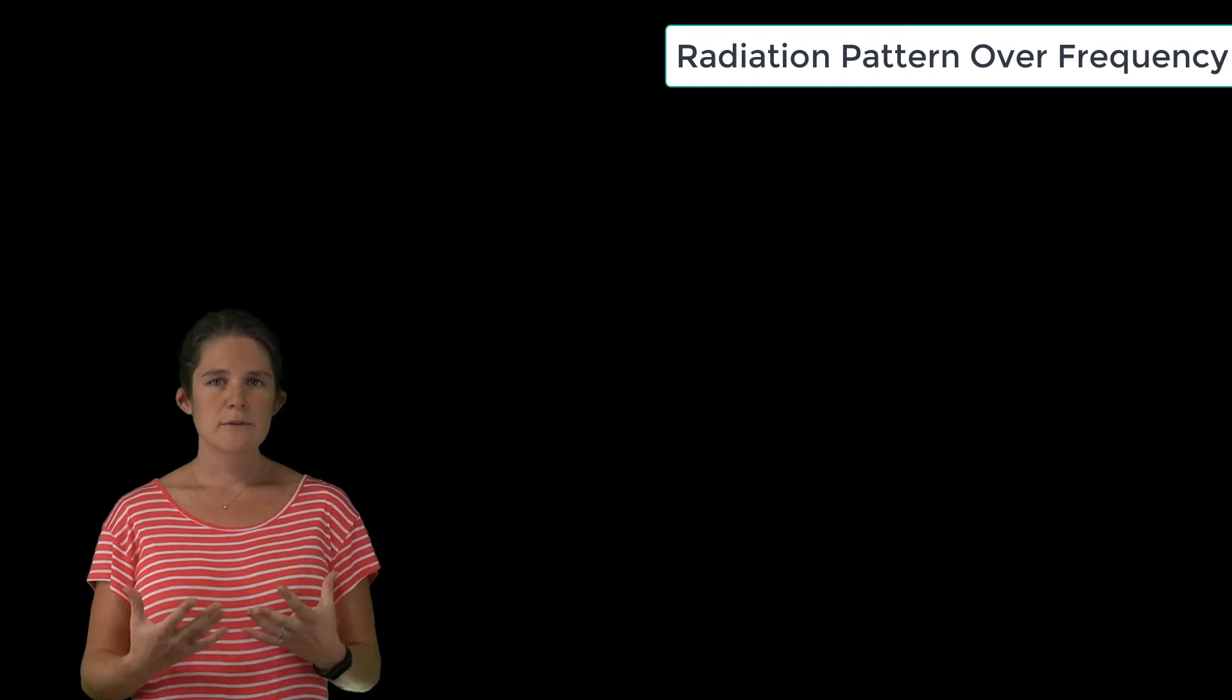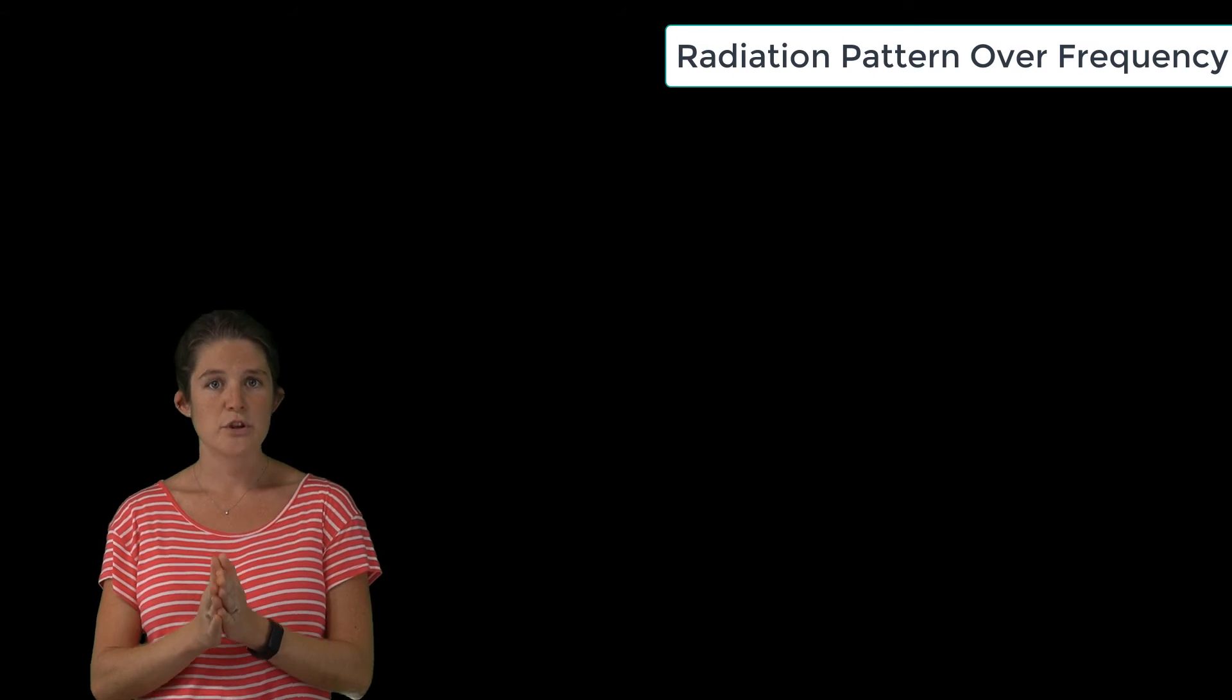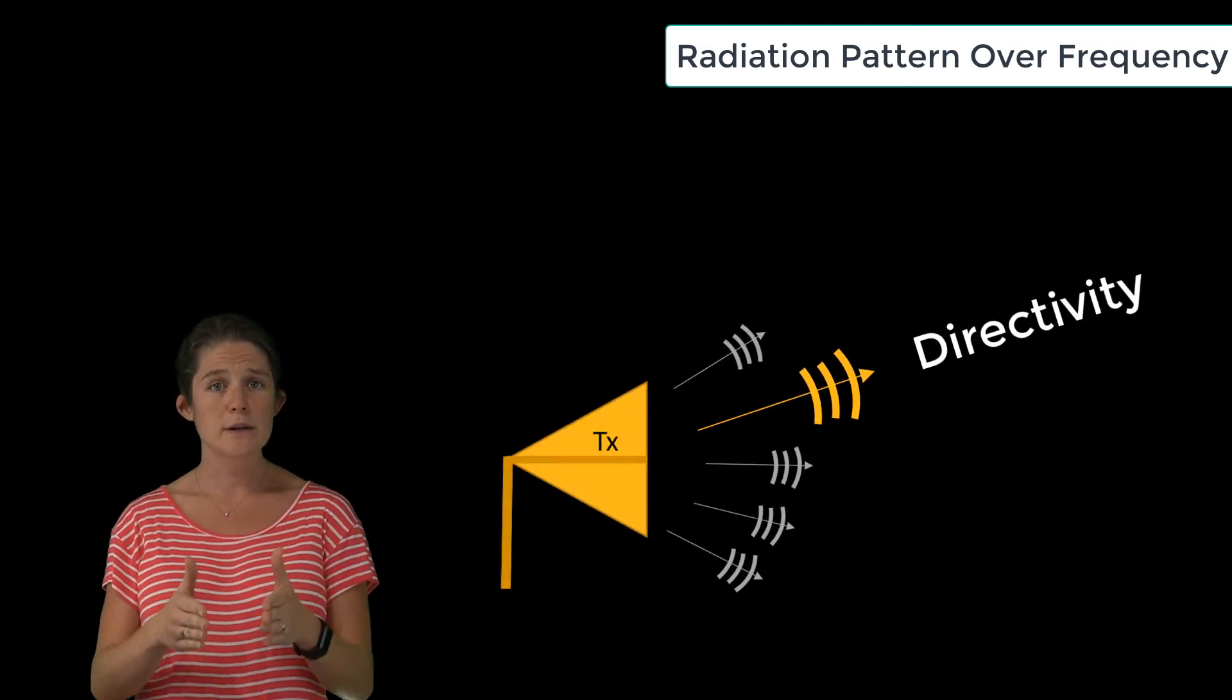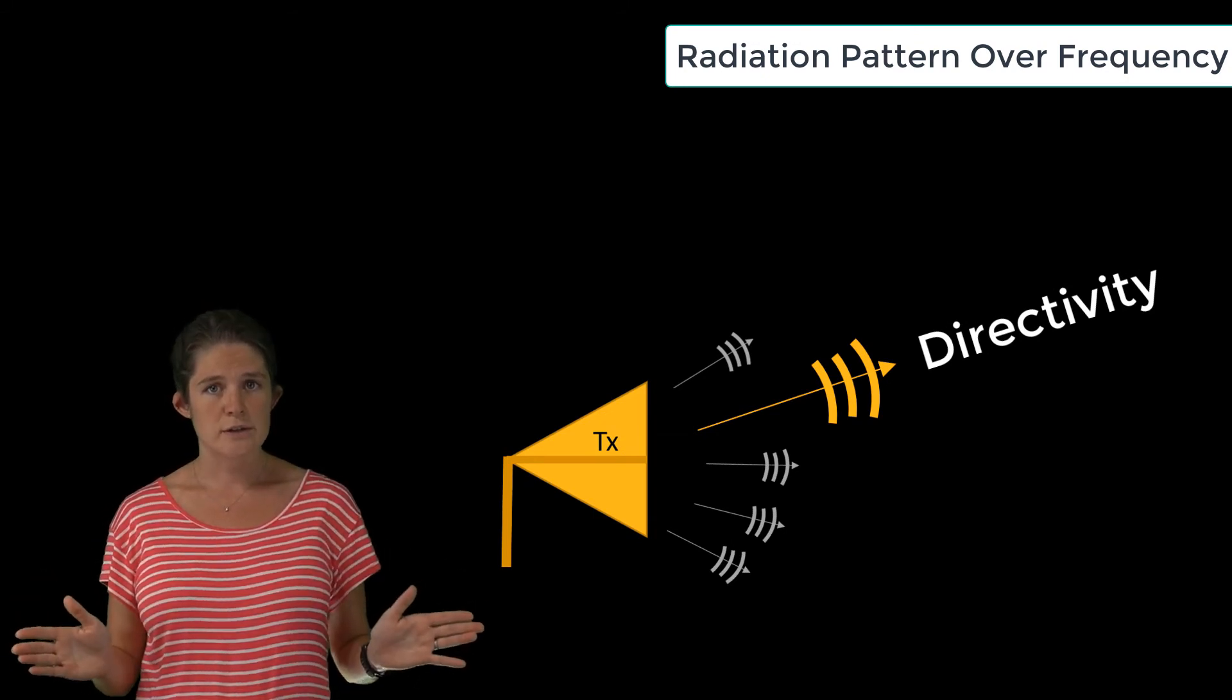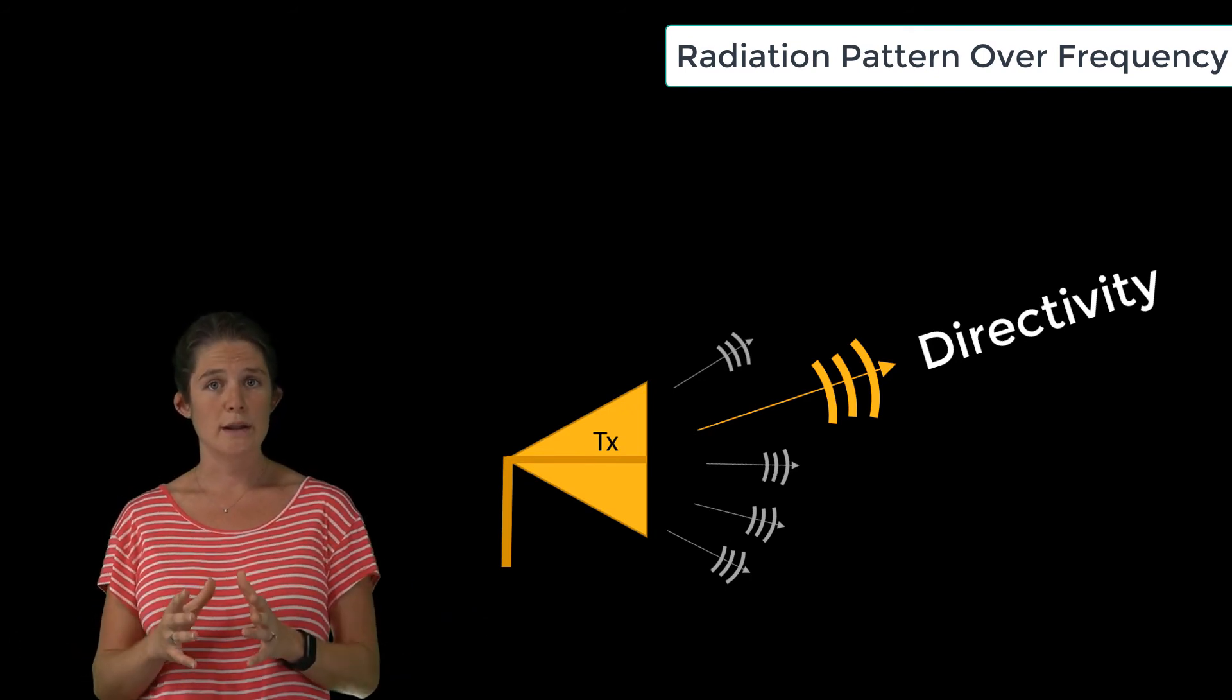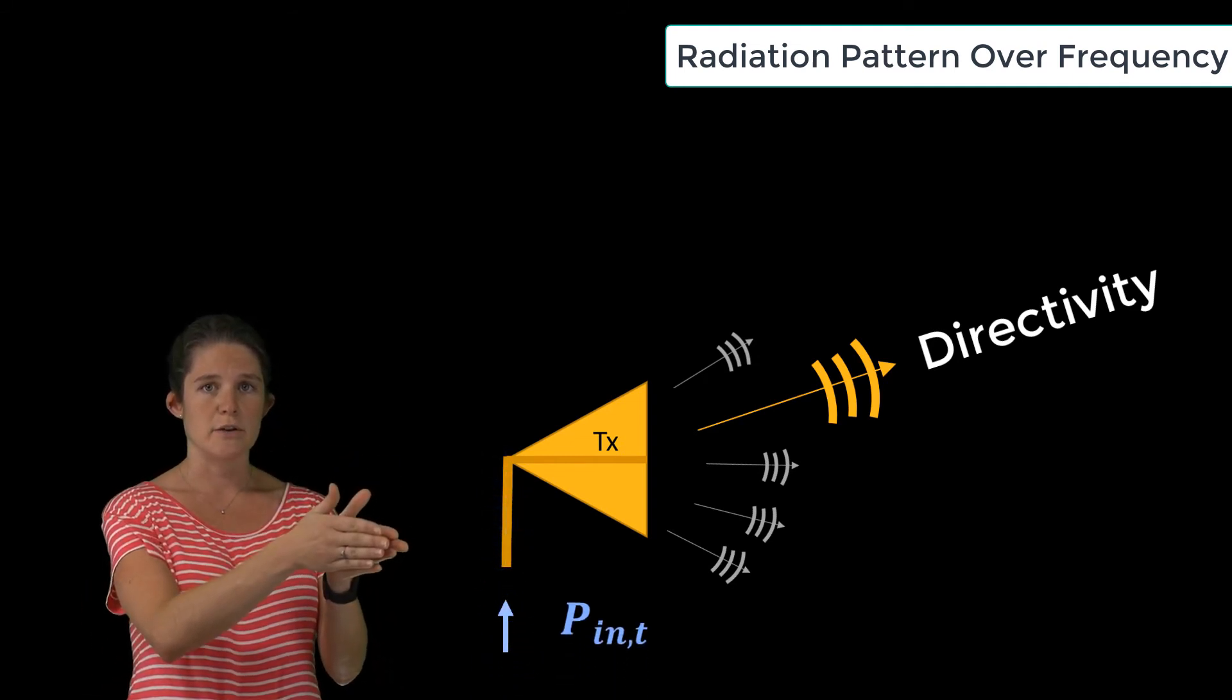Even assuming that you're able to achieve a perfect impedance match, you must remember that directivity is a measure of how well an antenna focuses its radiated power in a particular direction to the exclusion of other directions. It does not give you a complete picture of how well an antenna converts input power into radiation in a particular direction because it ignores antenna losses.